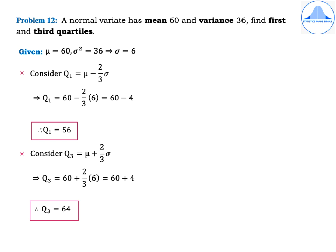The formula for the first quartile is Q1 = mu − (2/3)σ = 60 − (2/3)(6) = 60 − 4, so Q1 = 56. The formula for the third quartile is Q3 = mu + (2/3)σ = 60 + (2/3)(6) = 60 + 4, so Q3 = 64.